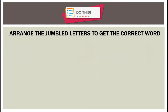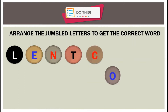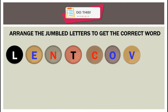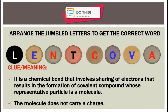Next, arrange the jumbled letters again to get the correct word: L, E, N, T, C, C, O, V, A. The clue: it is a chemical bond that involves sharing of electrons, resulting in the formation of a covalent compound whose representative particle is a molecule. The molecule does not carry a charge. What do you think is that word?